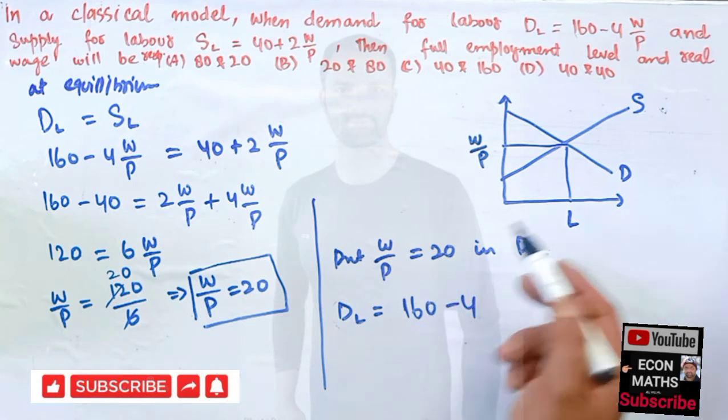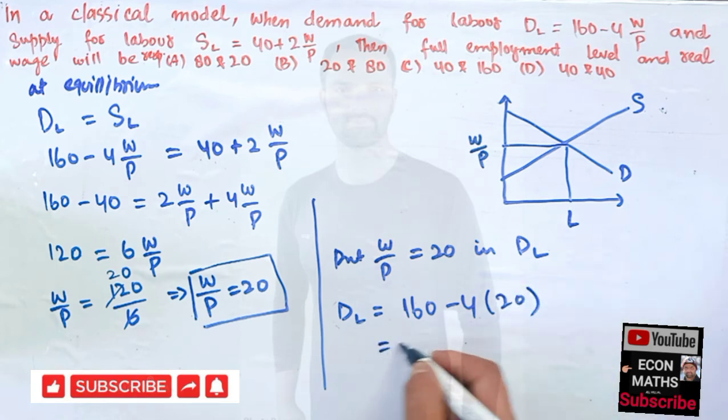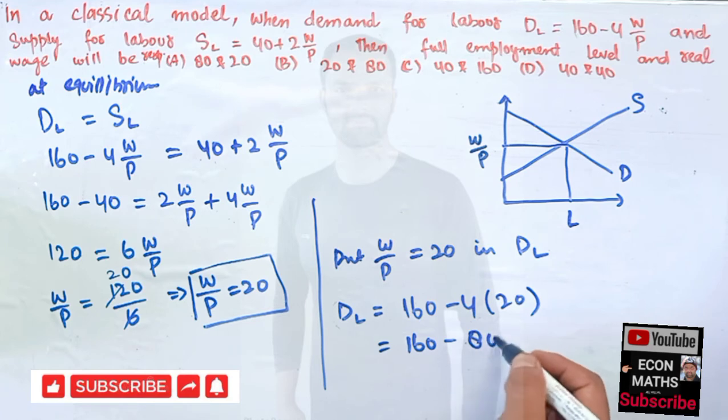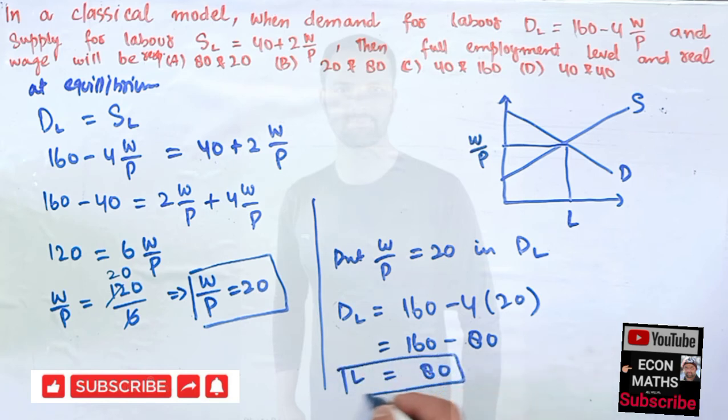4 × W/P, which we calculated as 20. So we have 160 - 4 × 20 = 160 - 80 = 80. That means our full employment level would be 80 and our real wage would be 20.